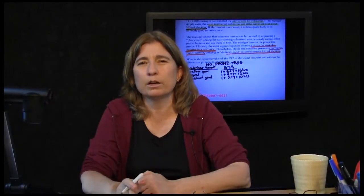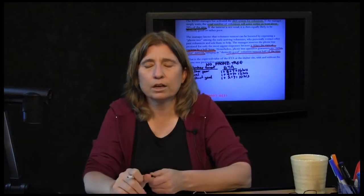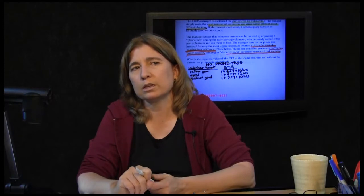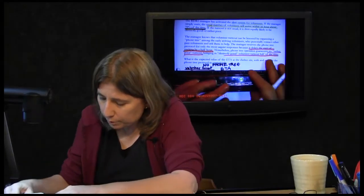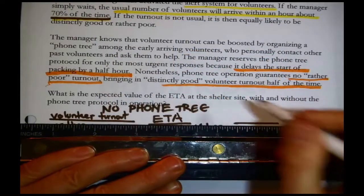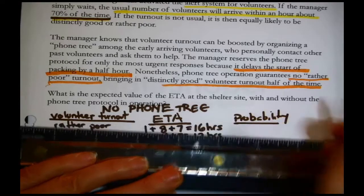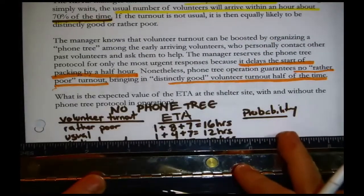We knew those ETAs from last time — anywhere from 16 to 10 hours. But now with this scenario, we know something new: there's a 70% probability that it will be usual turnout. We can now assign probabilities to each state, though we were only told the percentage for the usual case.